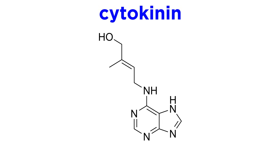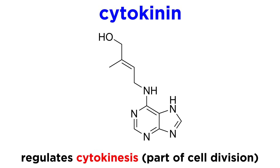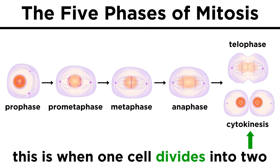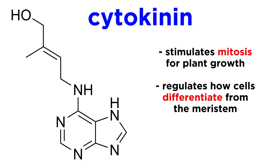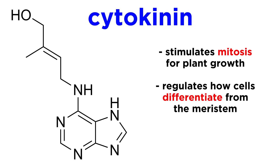The next important plant growth hormone is cytokinin, named for its role in regulating cytokinesis, which is a process that occurs at the end of cell division. Cytokinin is responsible for stimulating mitosis for growth, regulating how cells differentiate from the meristem, and how quickly or slowly plant tissues senesce, or age.